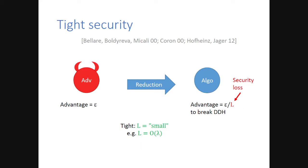To avoid that, we would like to build reductions with tight security, which means that the security loss L is small—in particular, independent of the number of challenge ciphertexts, and typically a small constant times the security parameter lambda. Think of lambda as 128, which is much smaller than the number of challenge ciphertexts. Finding tight security reductions in the context of encryption and signatures has been extensively studied before.